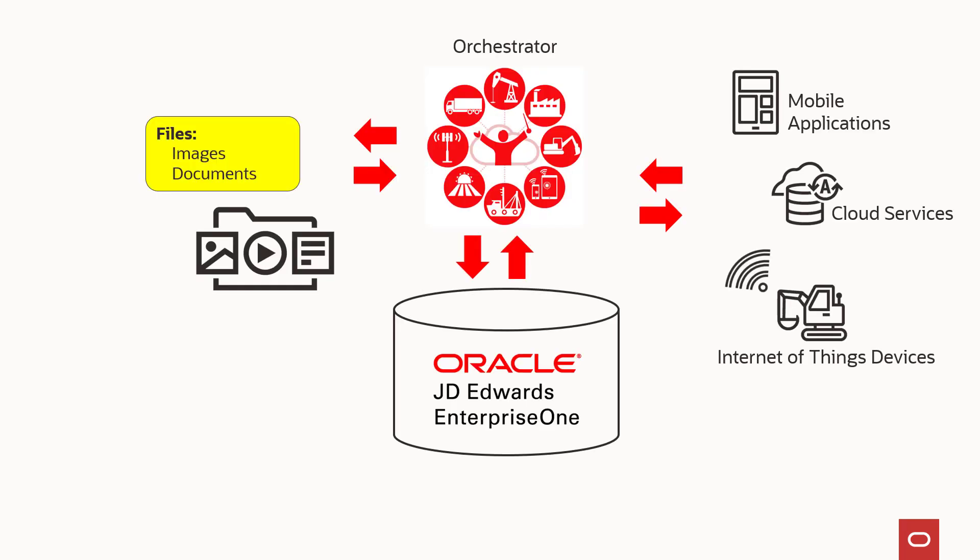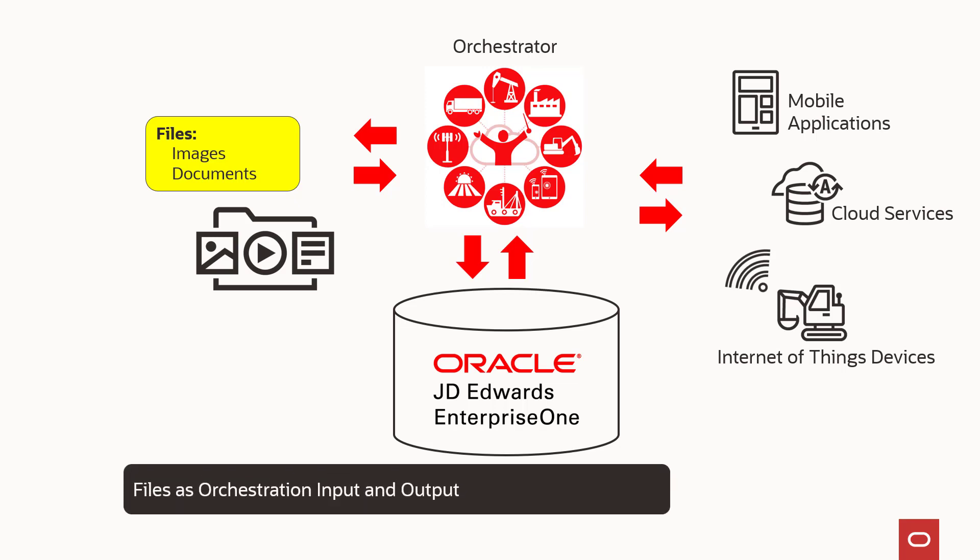Beginning with Enterprise One Tools release 9.2.6, three new enhancements expand the capabilities of Orchestrator, enabling us to easily manage file-based content. The first enhancement allows files to be included as part of the input and output of orchestrations. Once the files are part of an orchestration, Orchestrator can act on them, share them with content management systems, or even read them as a source of input for subsequent orchestration steps.